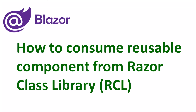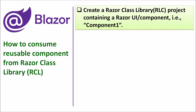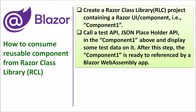In this video we will discuss how to consume a reusable component from a Razor Class Library. The first step is to create a Razor Class Library project containing a Razor UI component, for example Component One. The second step is to call a test API, namely the JSON Placeholder API, in Component One and display some test data on it. After this step, Component One is ready to be referenced by a Blazor WebAssembly app.